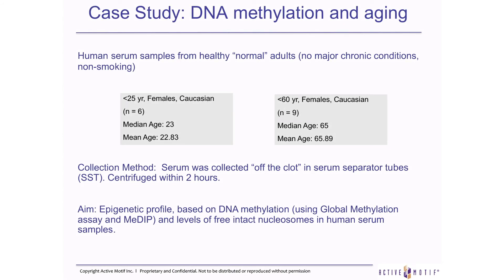Changing gears, I would like to present a project carried out by our scientist in Carlsbad, Dr. Akanksha Singh. The scope of this experiment is to identify methylation marks during aging using cell-free DNA from serum. We used two different groups — one from younger females and one from older females — and performed a series of experiments to identify differential methylation profiles.